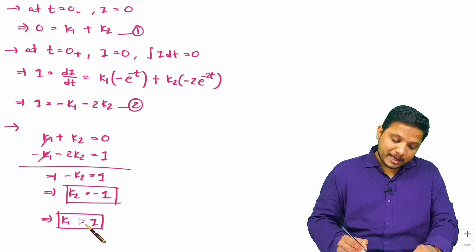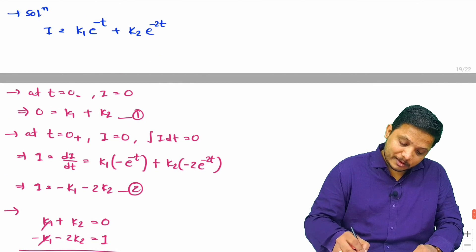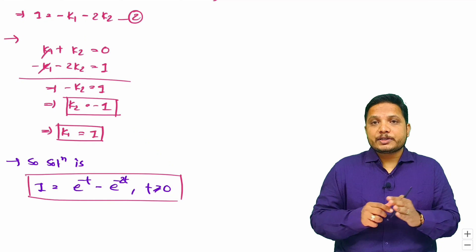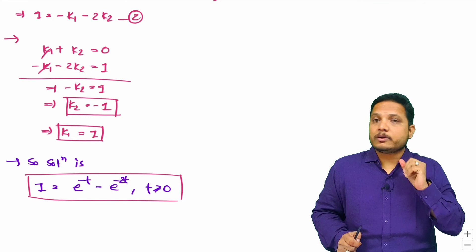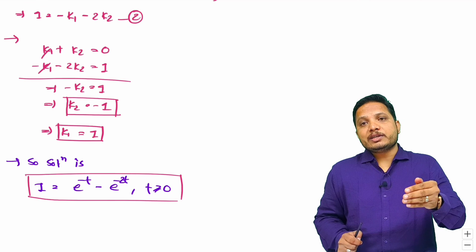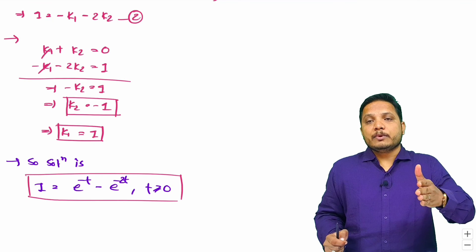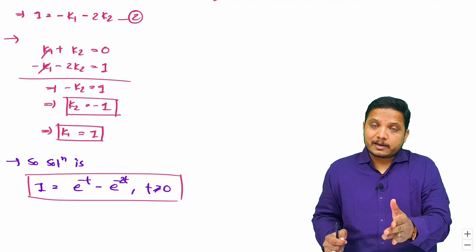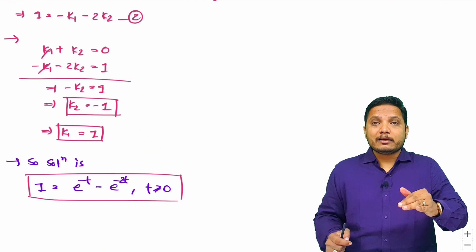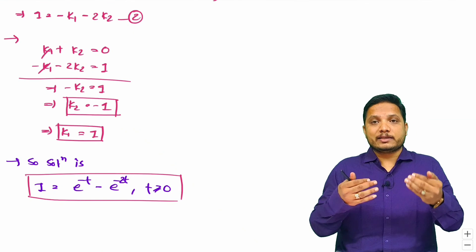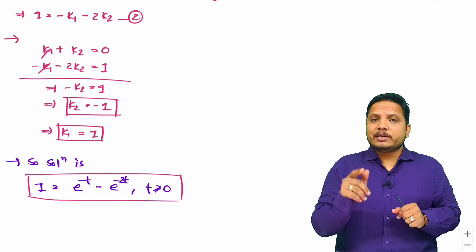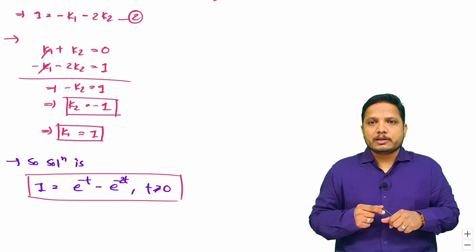Substituting k1 = 1 and k2 = −1 into the general solution gives the final current i(t). Whenever you have this type of question, identify how many constants are present and apply that many zero initial conditions — at t = 0 minus and t = 0 plus. Also substitute values into the differential equation itself. I hope you have understood this. Thank you so much for watching this video.